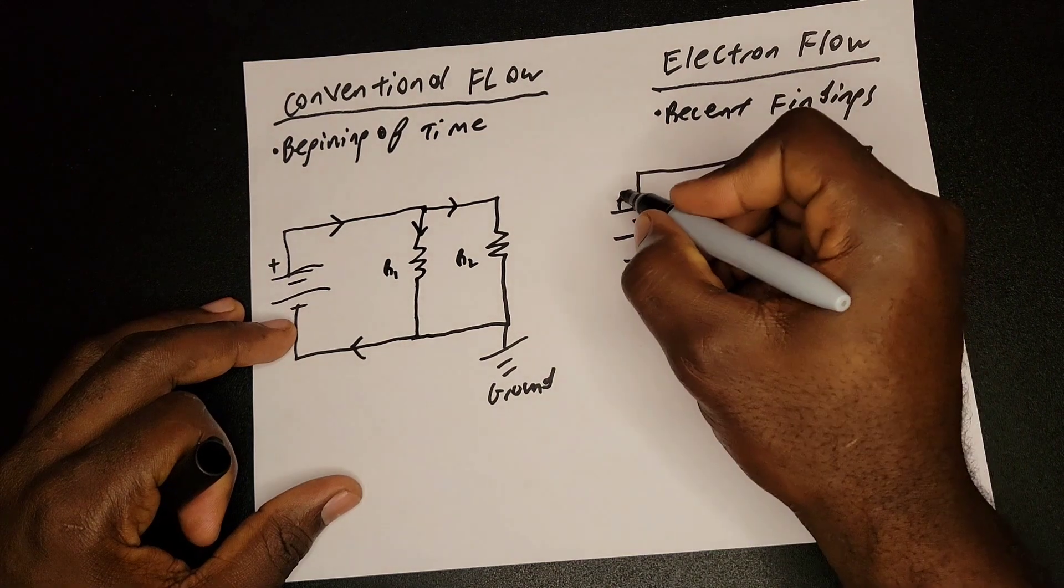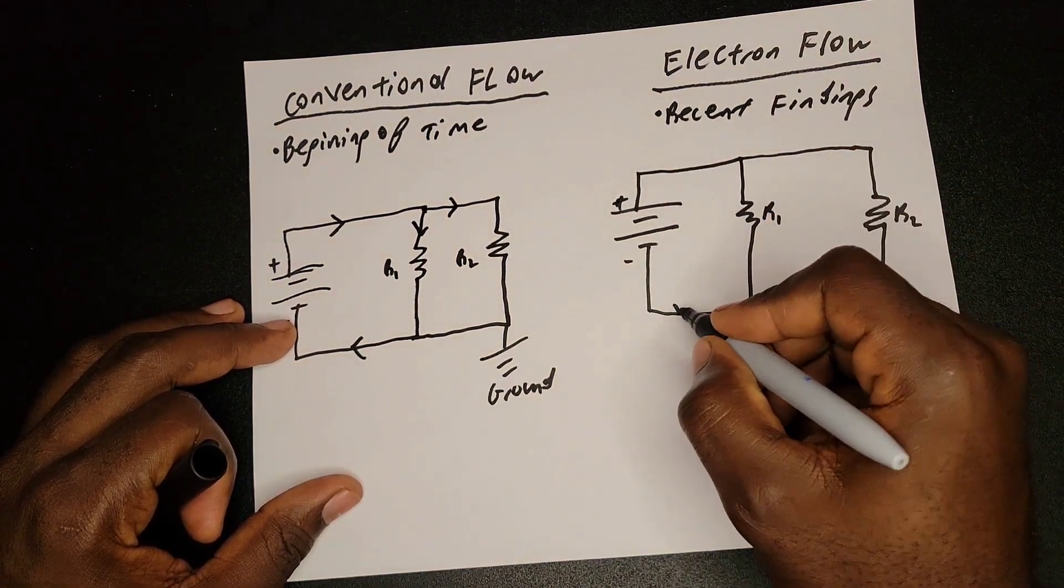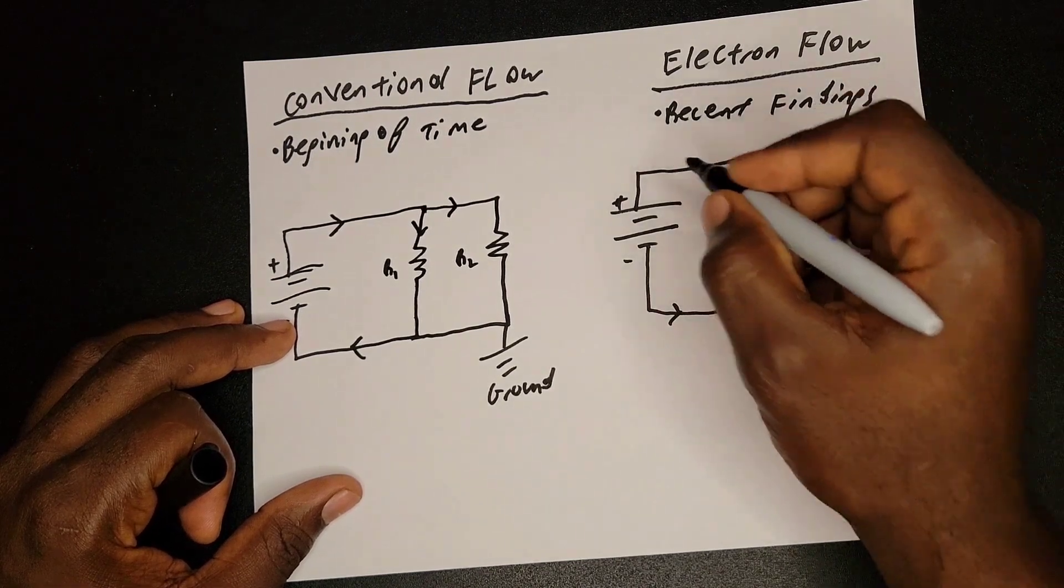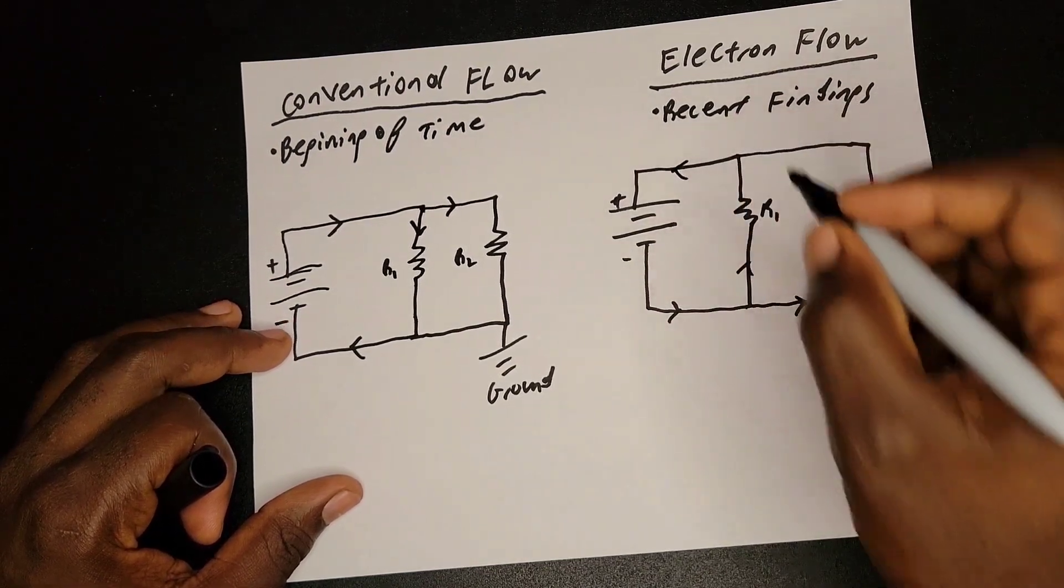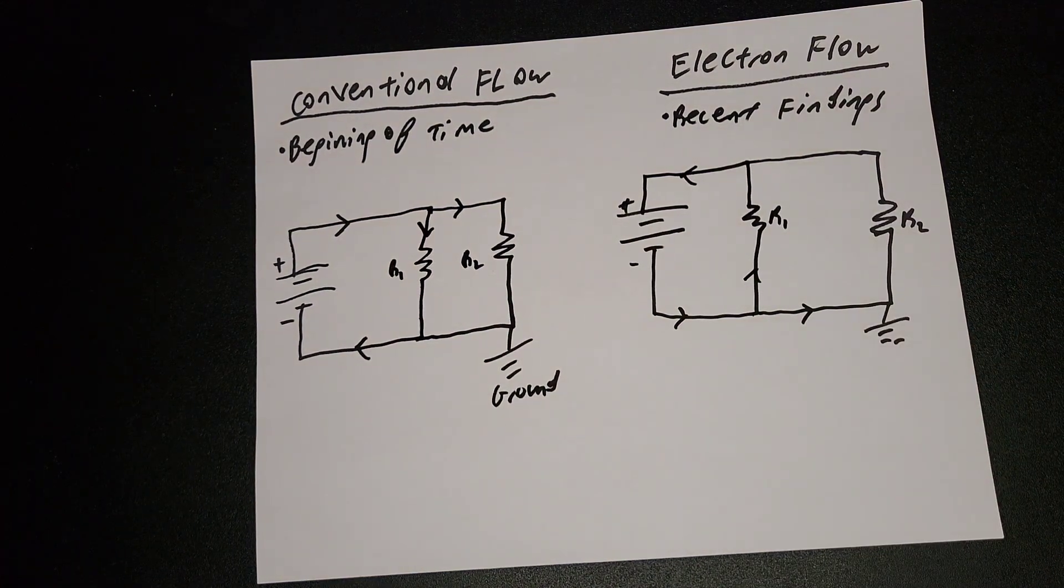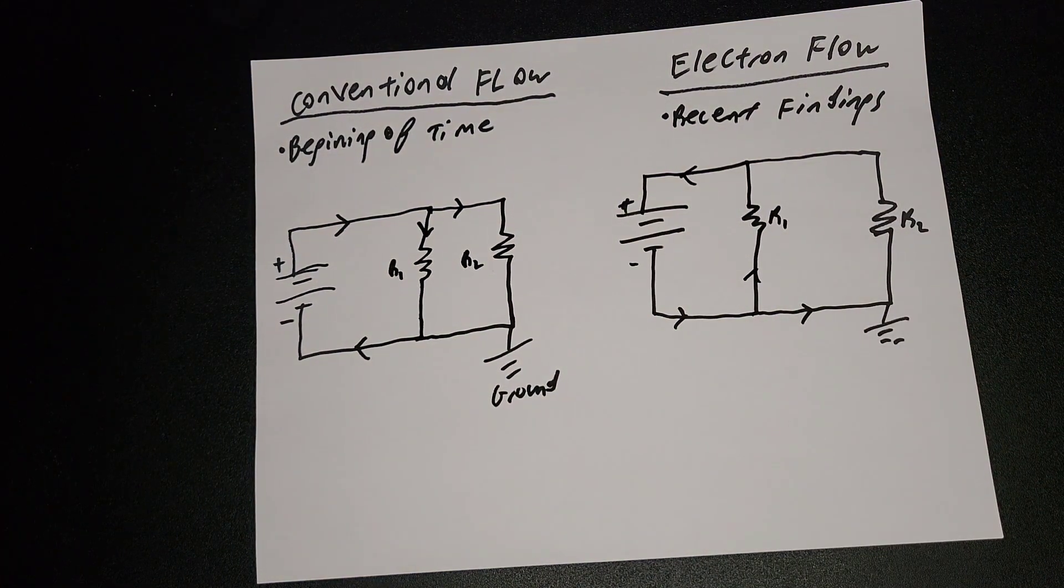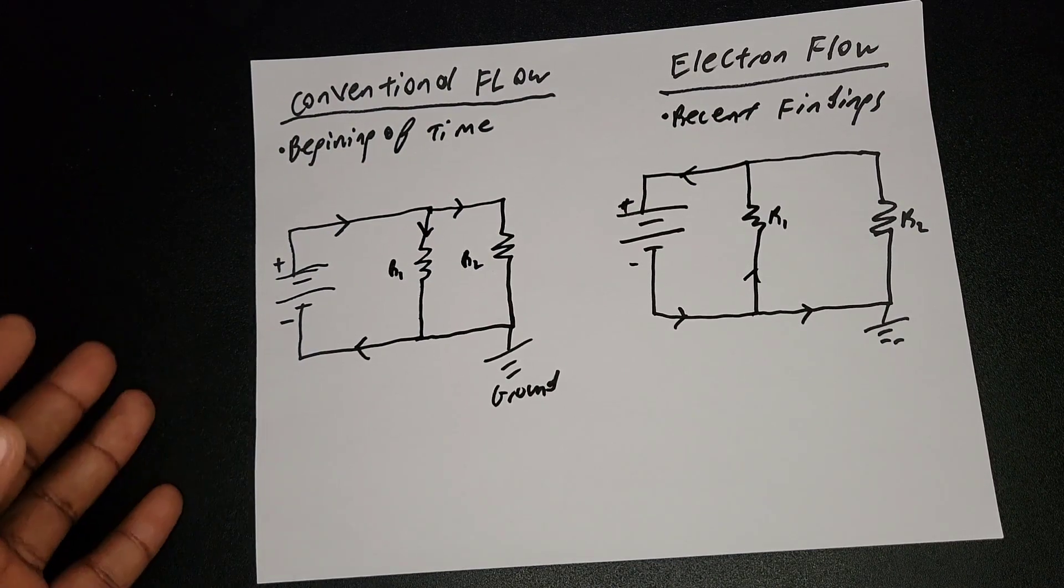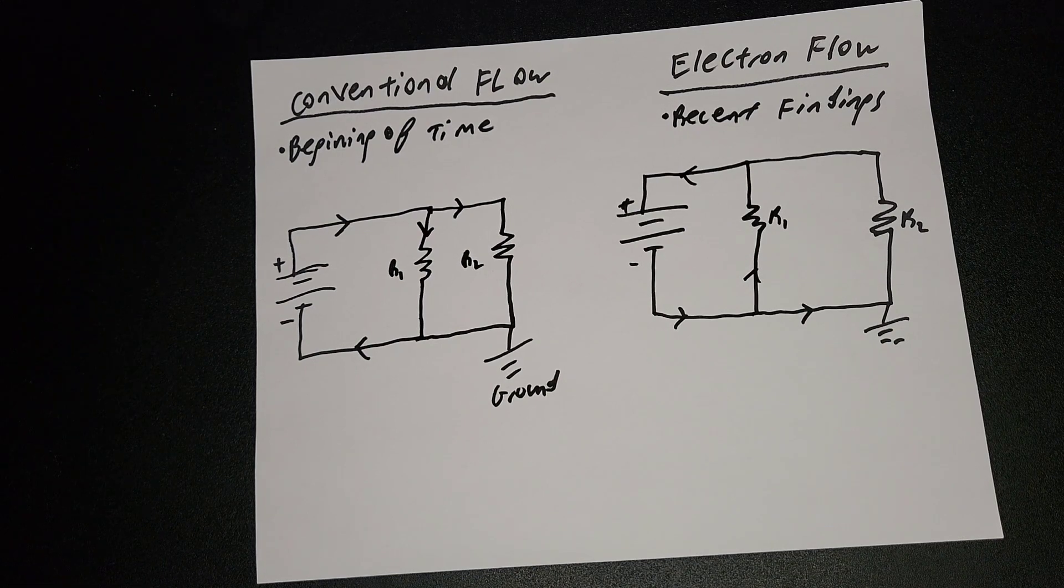Electrons actually move from negative to positive. So if electrons move from negative to positive, how does current flow from positive to negative? Because when current flows, electrons are moving. So that right there is a bit confusing.